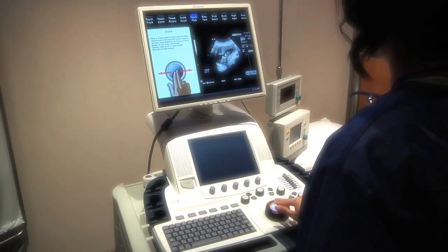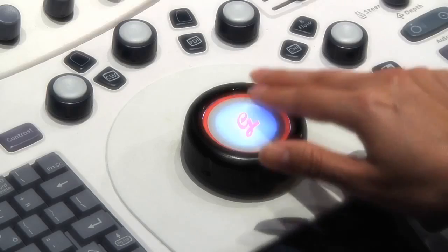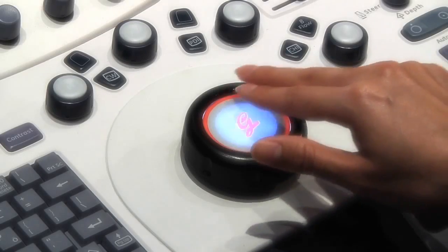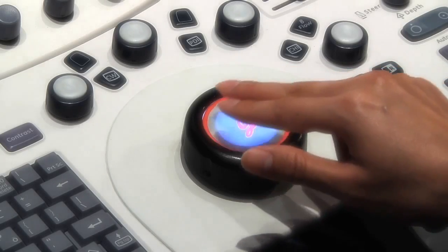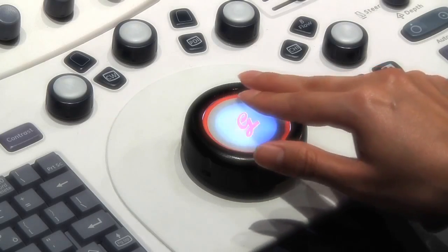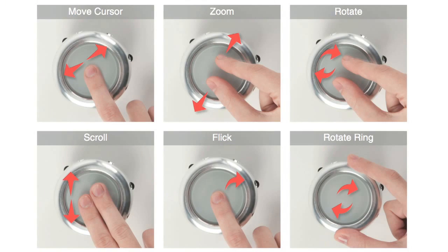Instinct's ability to recognize and interpret momentum is very useful for quickly scrolling or flicking through a long menu or list of images. These examples are just a few of the gestures in the Instinct gesture library.